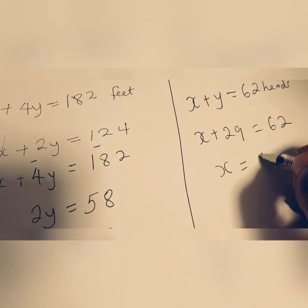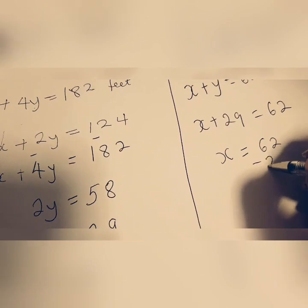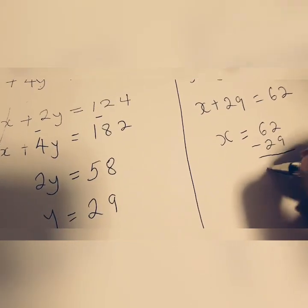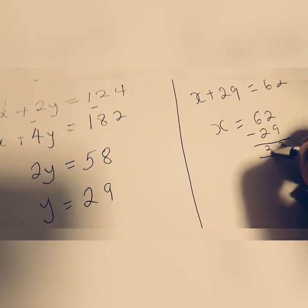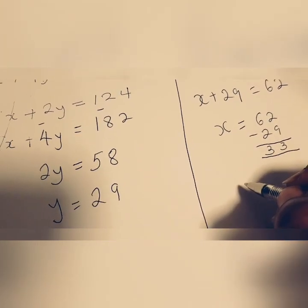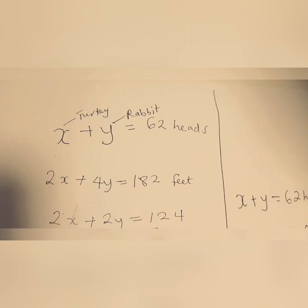x would be 62 take away 29, which in this case will give you 33. So we have 33 turkeys.